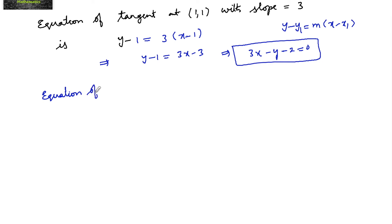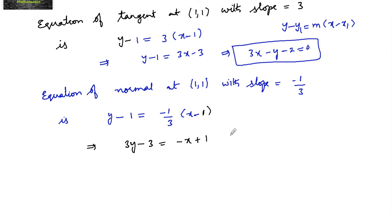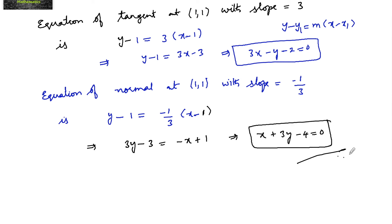Equation of the normal at (1, 1) with slope -1/3: using the same point-slope form y - y₁ = -1/3 · (x - x₁), substituting x₁ = 1, we get 3y - 3 = -x + 1, which gives x + 3y - 4 = 0. This is the equation of the normal.